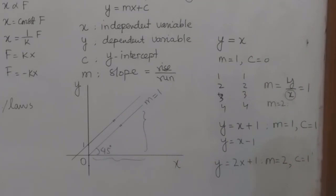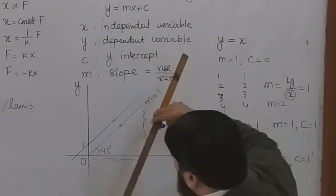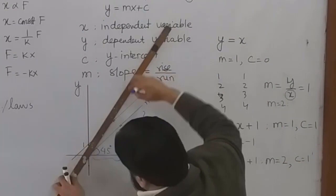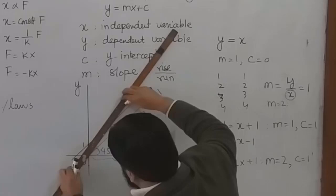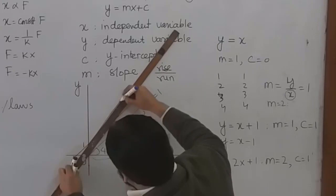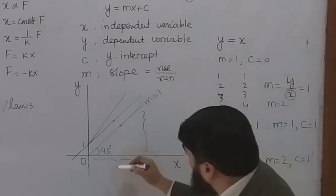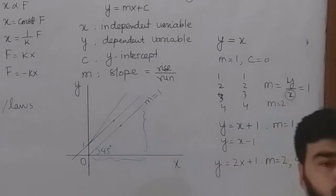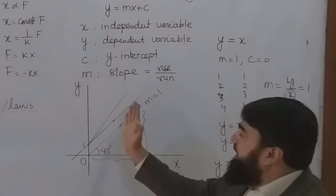So our straight line will no more be parallel to these lines, but it will change and become something like this — from here I will change the slope of it. When the slope changes, the straight line's inclination changes, but it should remain a straight line.